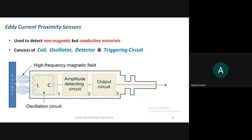Based on that principle, with the help of the oscillating circuit, a changing magnetic field is produced using an inductor and capacitor — an oscillating circuit producing a varying magnetic field, as you learned in 12th standard physics. The oscillating circuit is connected to an amplitude detecting circuit. When the magnetic field is changing and the target material is placed nearby, an eddy current forms inside the target material.